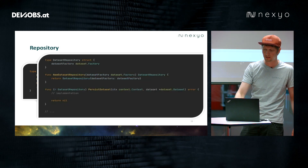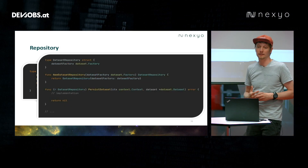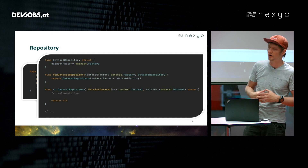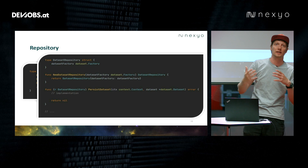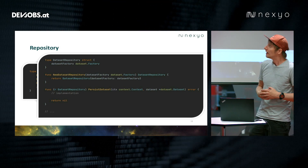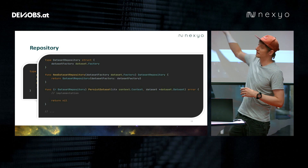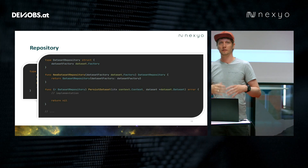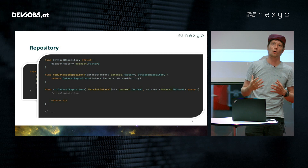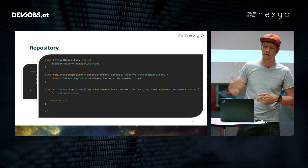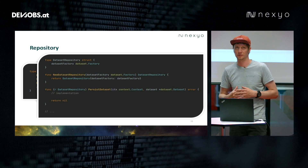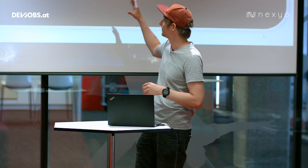That comes with a real instance. For example, you build a dataset repository, and in the persist dataset function you do the real implementation — how it interacts with the database and so on. You also find here that we inject a factory into this repository. The factory is the place where we encapsulate all the logic used to create the domain object, and also to bring it back from a database representation. So the repository takes this factory and can return real domain objects.